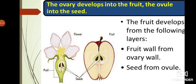The ovary develops into the fruit and the ovule into the seed. The fruit develops from the following layers: fruit wall from the ovary wall, and seed from the ovule. These are the two main steps - fruit from the ovary and seed from the ovule.